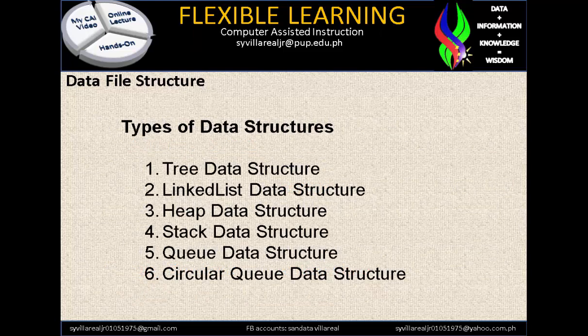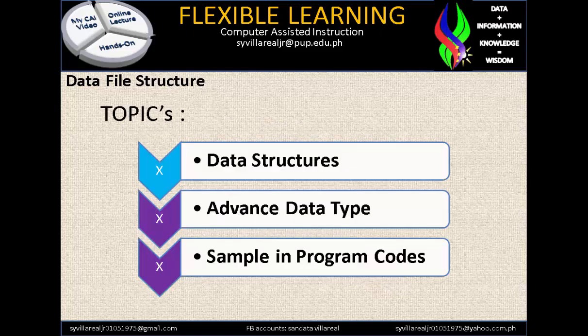There are 6 types of data structures, namely: number 1, tree data structure; 2, linked list data structure; 3, heap; 4, stack; 5, queue; and 6, circular queue. Those are considered to be the data structures. Let's proceed to our second topic: advanced data type.